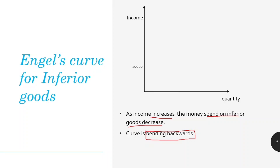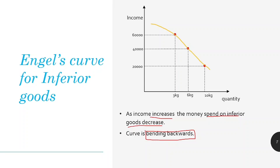On the graph, x-axis has quantity and y-axis has income. Suppose your income was 20,000 and the amount of bajra you were purchasing was 10 kg. Your income rises to 40,000 and you're buying only 6 kg because now you have more money to purchase good quality food. Your income rises further to 60,000 and you buy only 3 kg of bajra. When we join all these points we get a curve which is backward bending. The slope is negative.